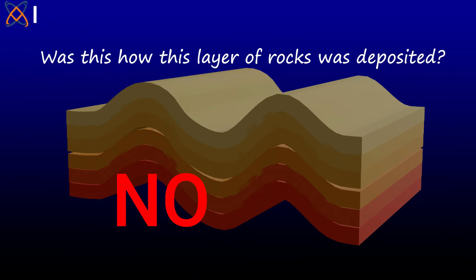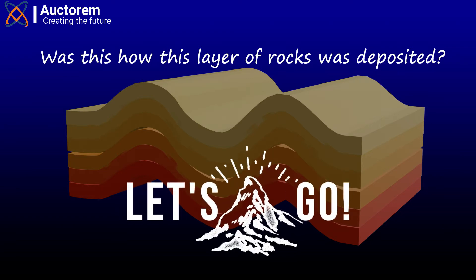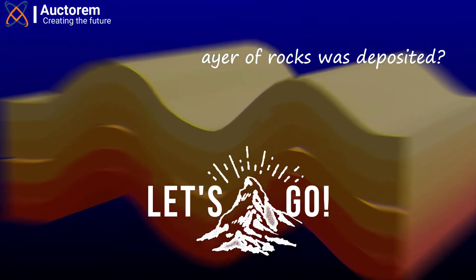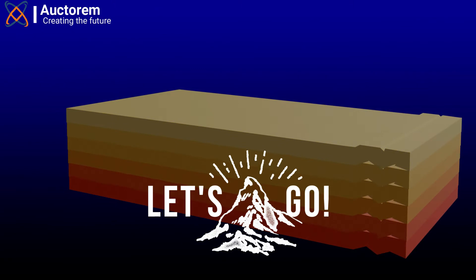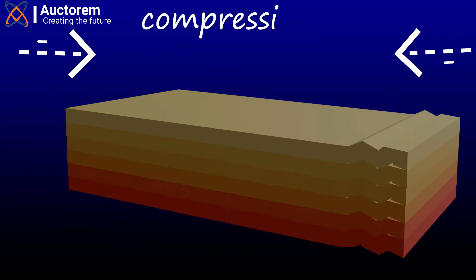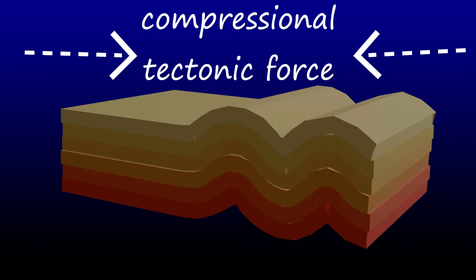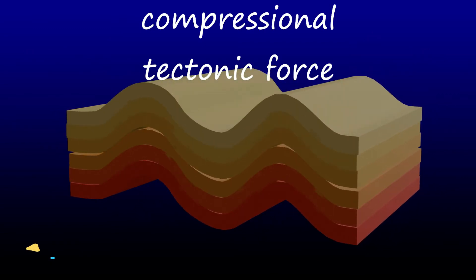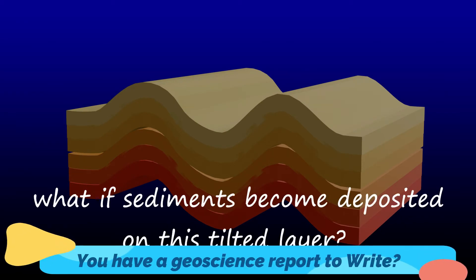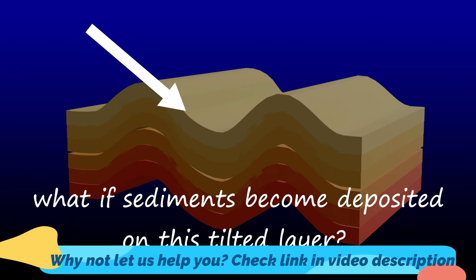If we are to explain how this fold came into existence, we have to travel back to the geologic past. Pack your bags — let's travel years back. These layers were once laid down horizontally, and then compressional tectonic forces pushed them together and caused the rocks to become folded. Someone is asking: what if sediment becomes deposited on this tilted layer?